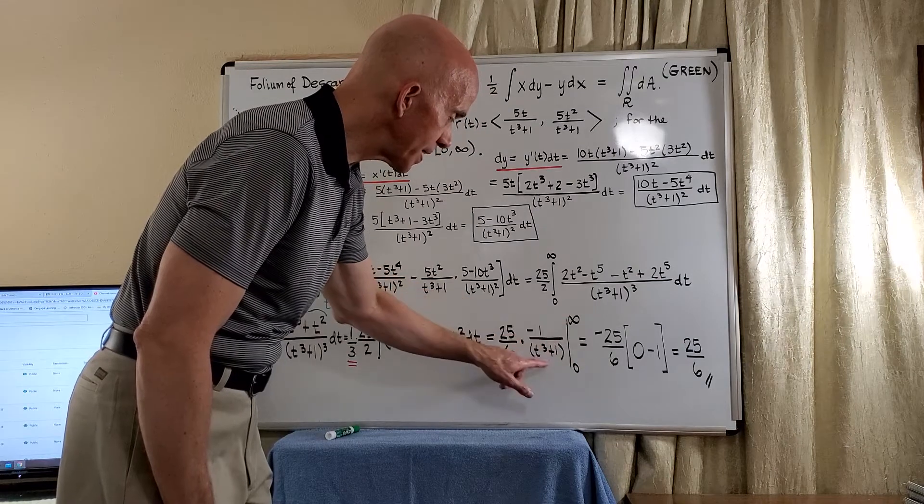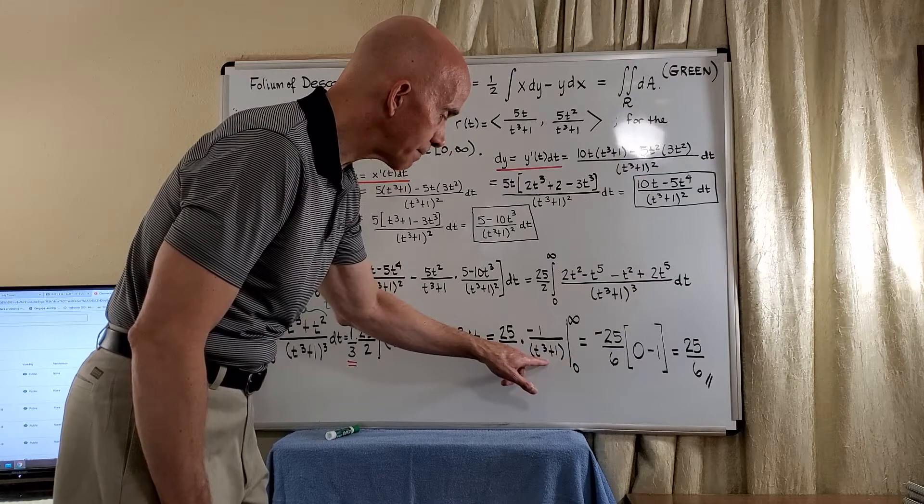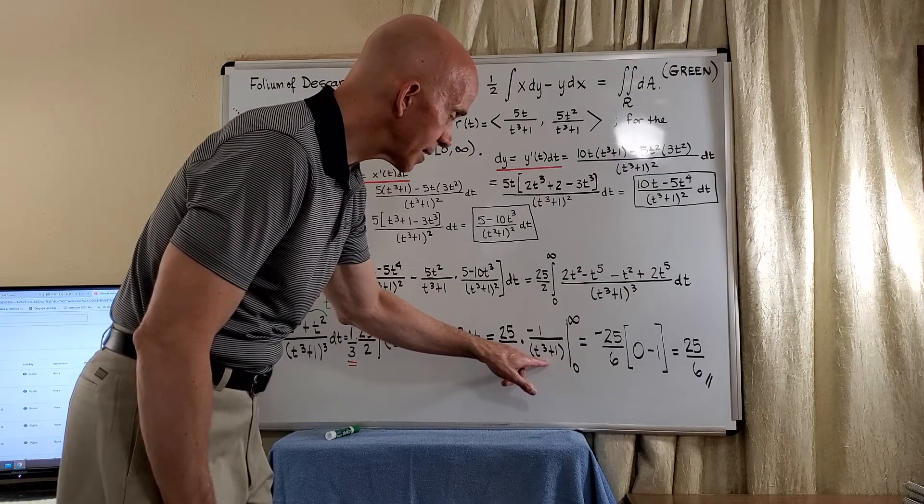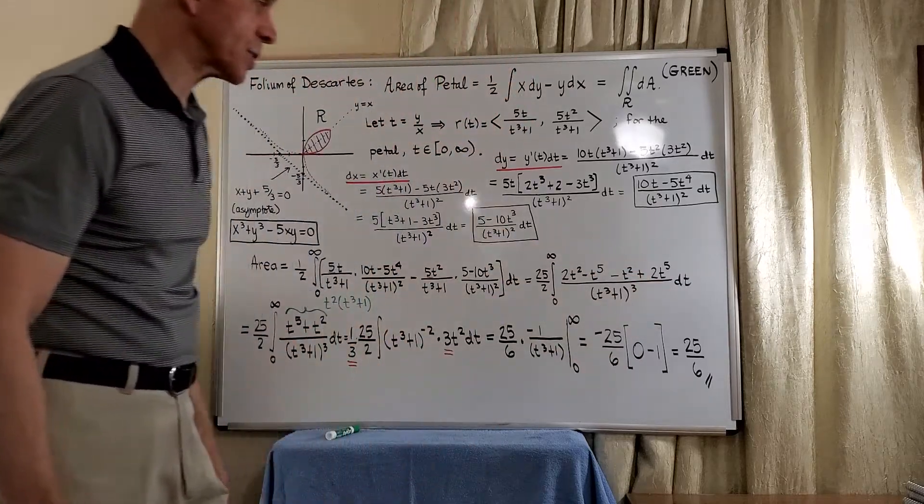As t tends to infinity, this converges to 0. When we replace t with 0, we just get minus 1. So we have the negative negative to give us 25 over 6.